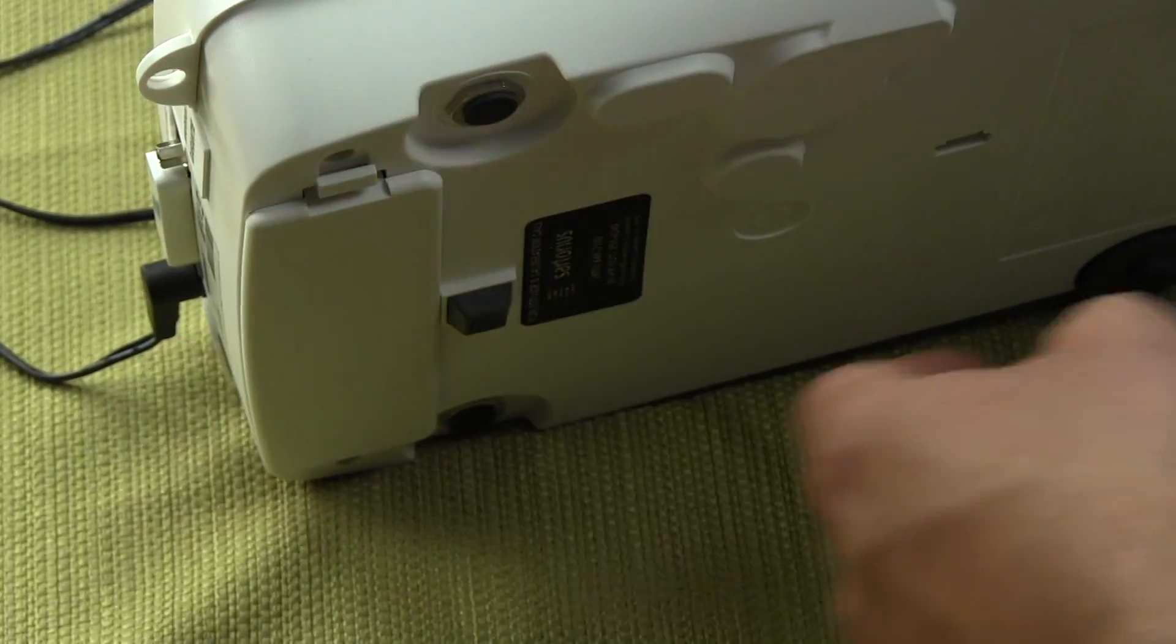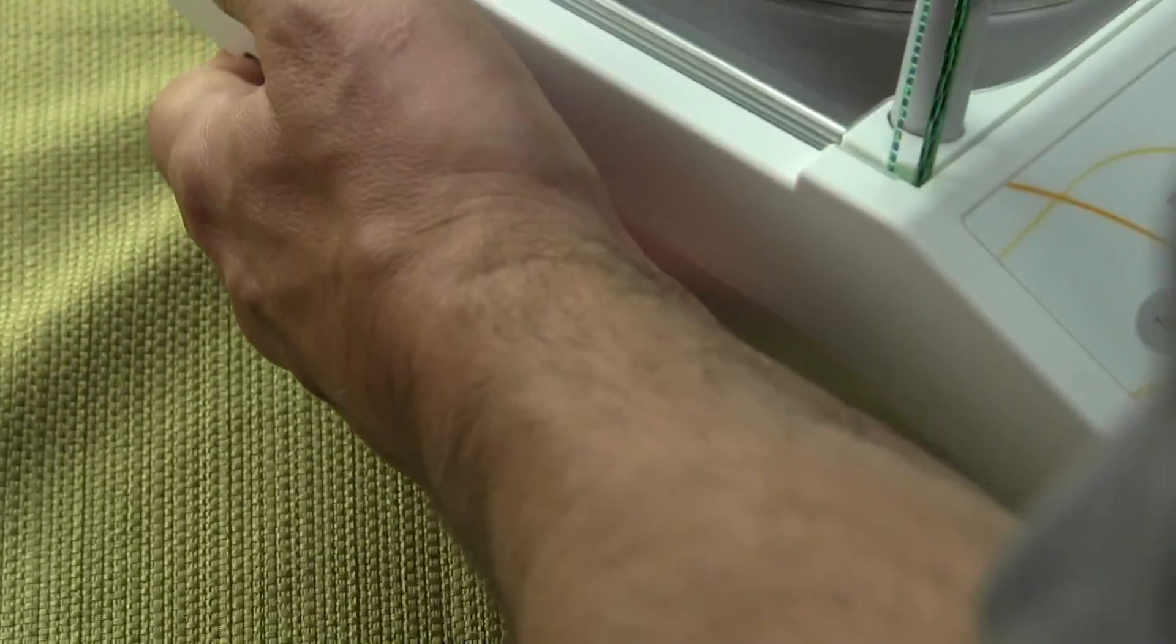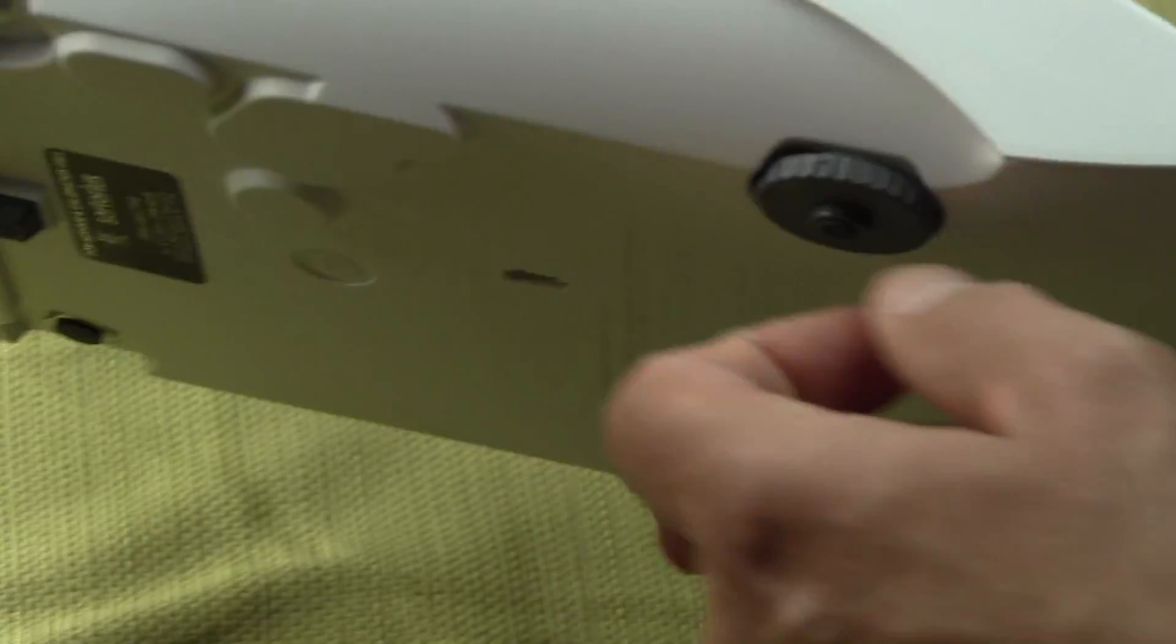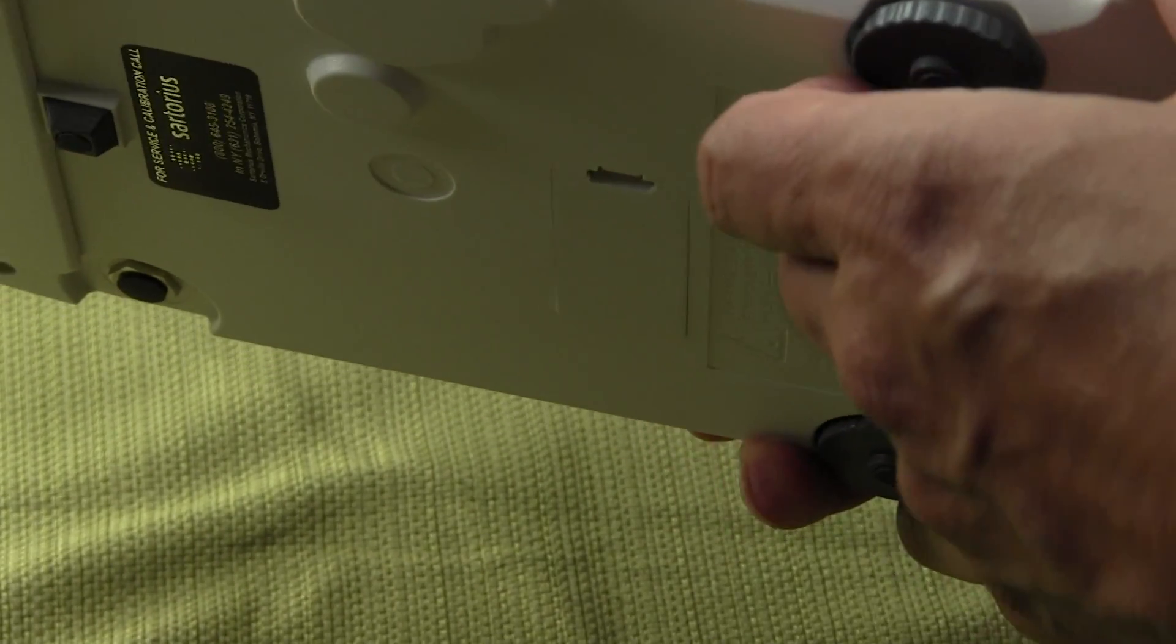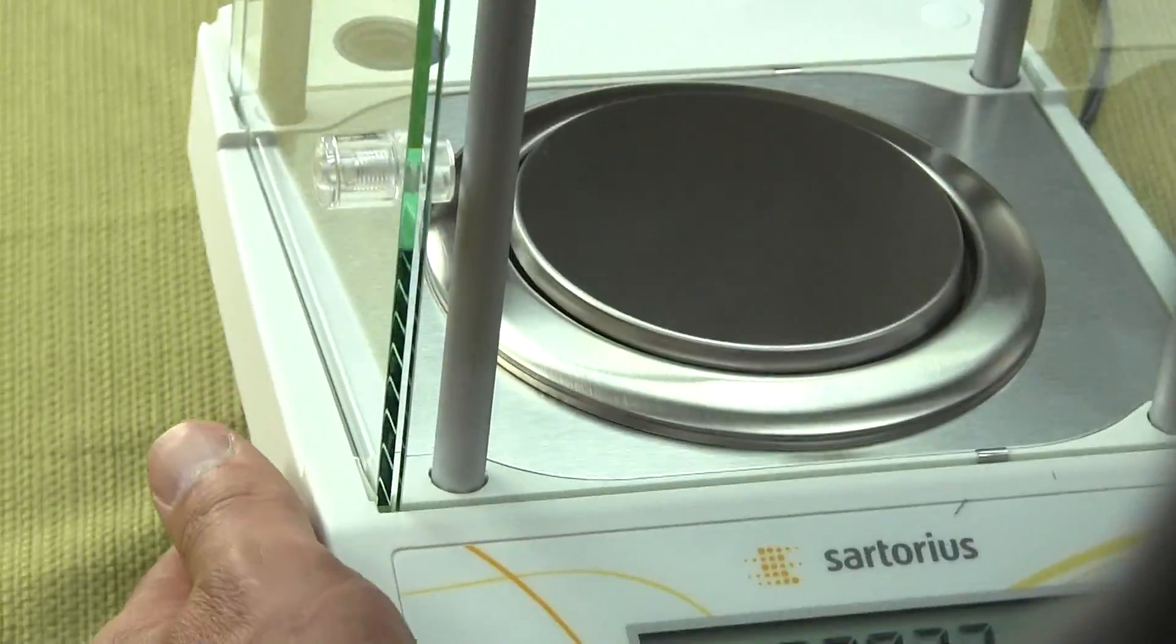On the bottom of the balance, you have basically, I don't want to break this, but you have two adjustable feet on the bottom of the balance. So here's one adjustable foot and the other one on the other side. There is no weigh-below hook. Again, this is Sartorius' economy version.